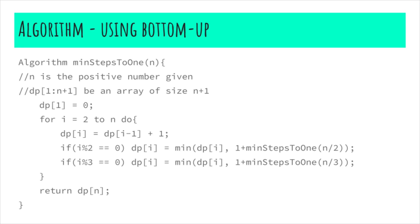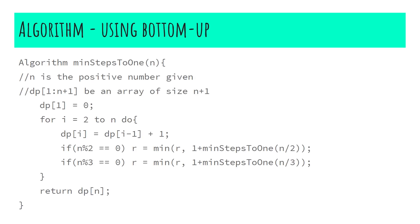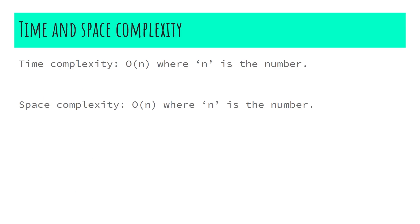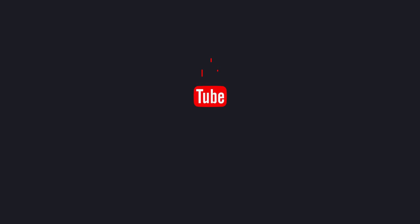Let's look at the time and space complexity analysis. The time complexity is O(n) for both the memoization technique and the bottom-up approach. The space complexity is also O(n) in both approaches, since we use an extra array of size n.